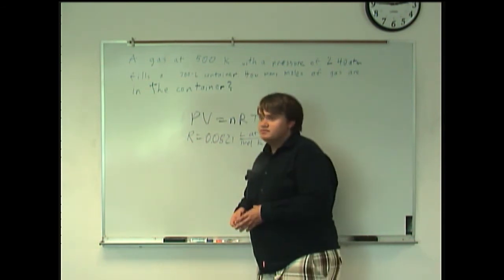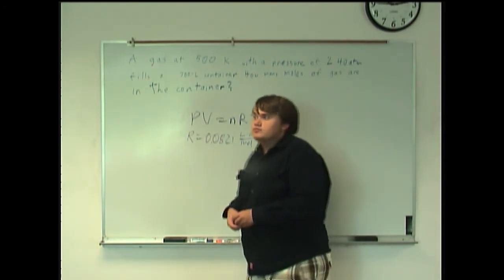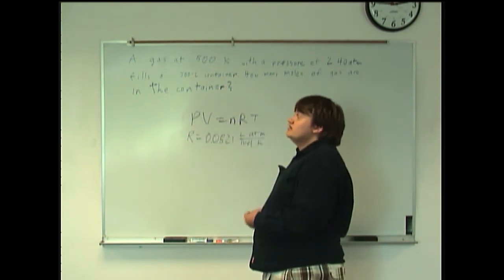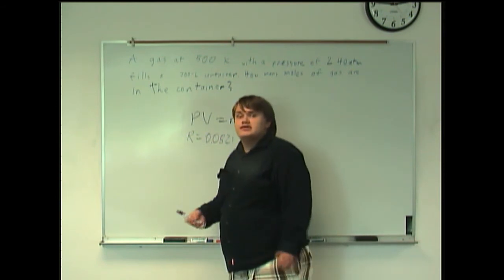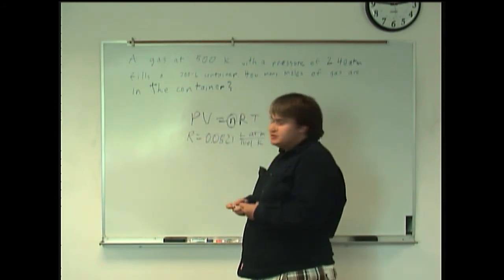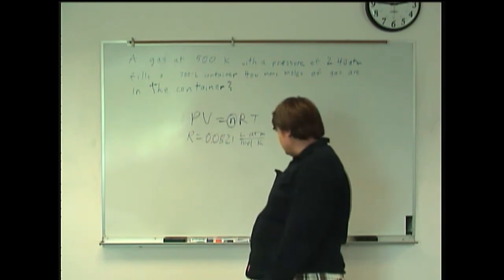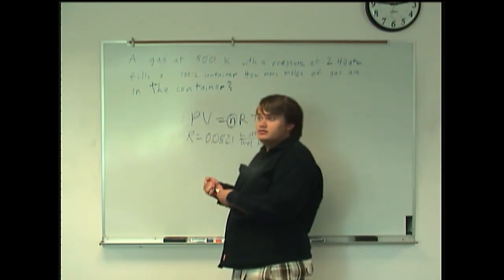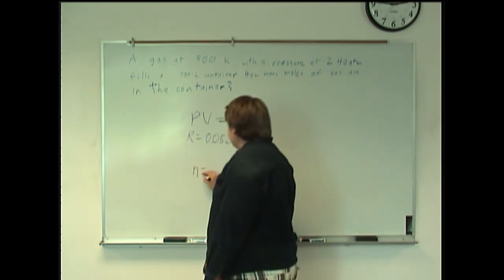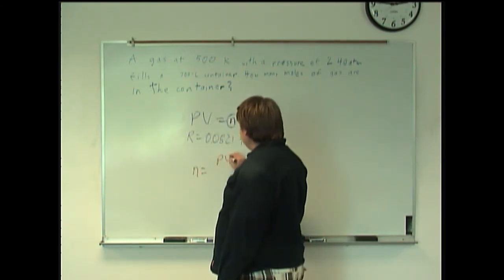Alright, so our goal with this problem is to essentially rearrange this equation so that we get the variable we're looking for by itself on one side. In this case, it'll be the n, the moles. And so, by rearranging it algebraically, we get n equals PV over RT.